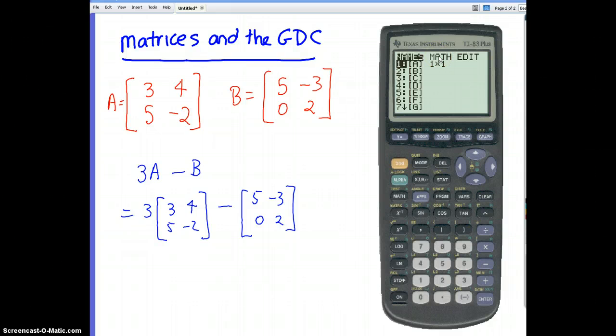So the first thing I want to do to enter matrices is I have to go to edit. I can call them anything I want here. Let's say I want to call it matrix A and B. So I'm going to select matrix A and press enter. Now I've got my dimensions here - it's a 1 by 1, but I want a 2 by 2.